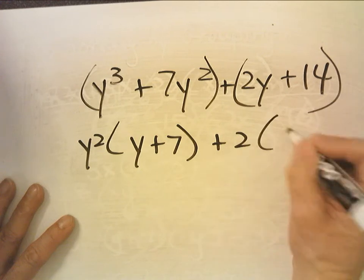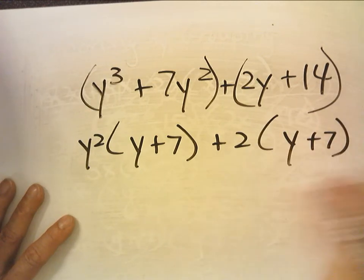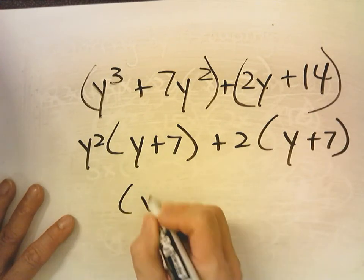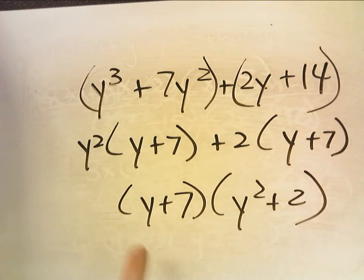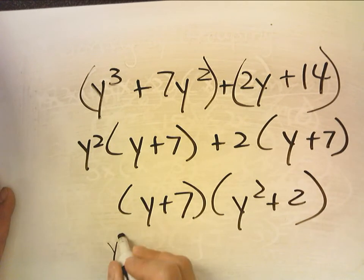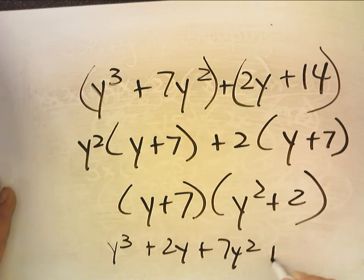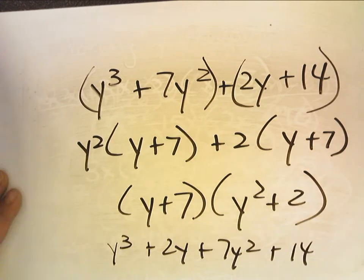I'm going to take a 2 out of here. I get y plus 7. Now I notice y plus 7 is my common factor. And I'm left with y squared plus 2. And if I want to check to see if I'm right, I FOIL. And I get y cubed plus 2y plus 7y squared plus 14. And again, back where I started.